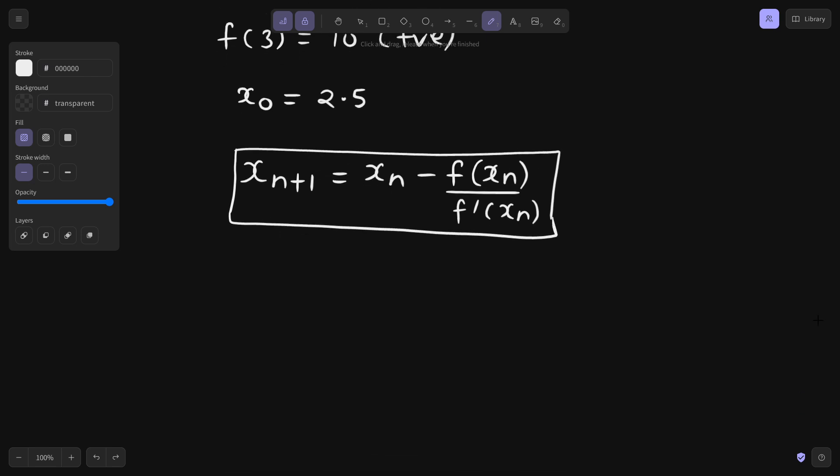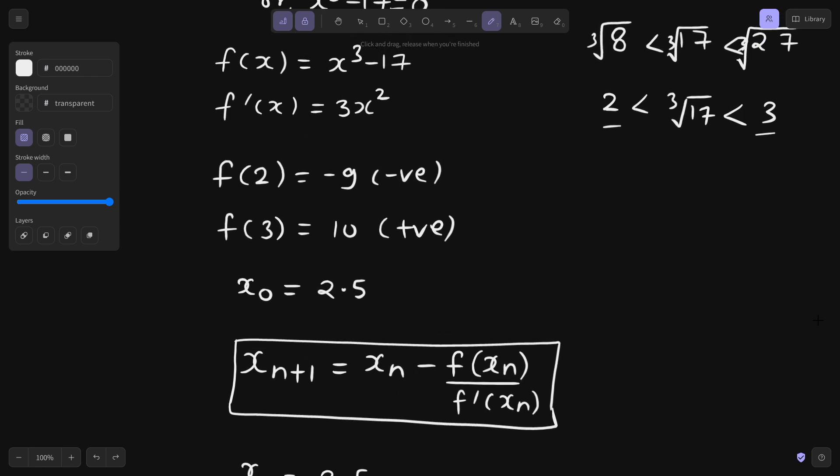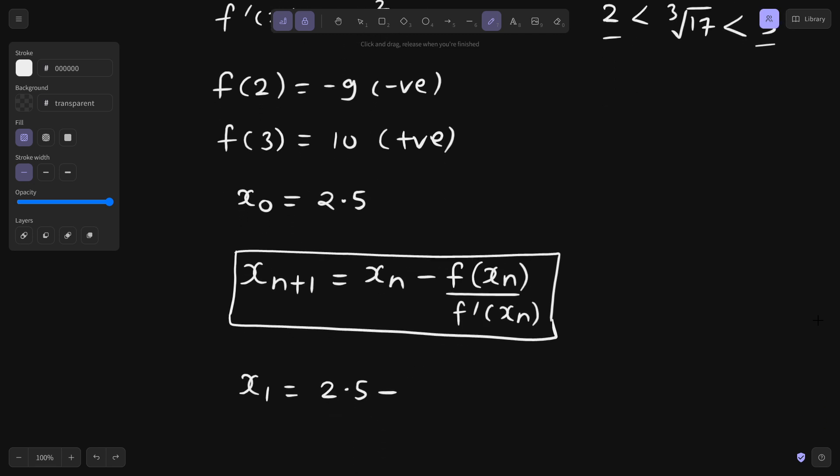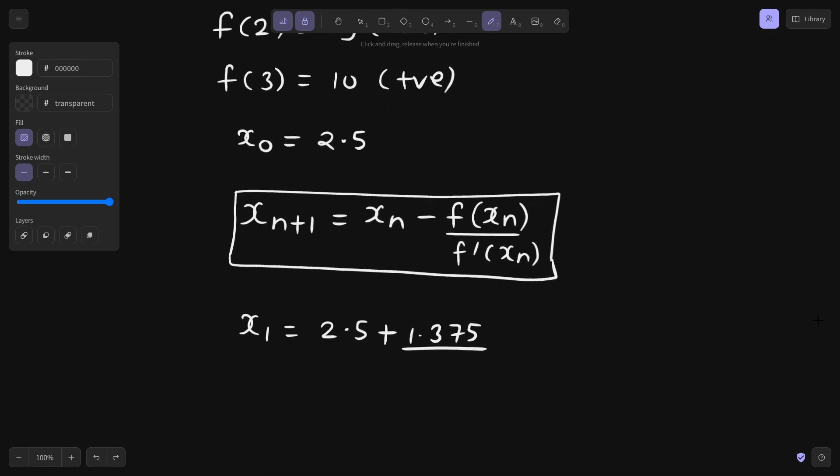If you find x 1 for n equals to 0, that will be x naught which is 2.5 minus value of function at 2.5. So that will simply be 2.5 cube minus of 17. So this is giving us minus 1.375. Minus minus 1.375, minus plus. Derivative value at 2.5. Derivative is 3x square. So 3 into 2.5 square. So this is plus 18.75.